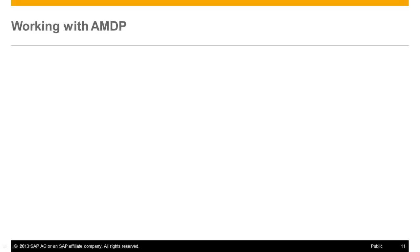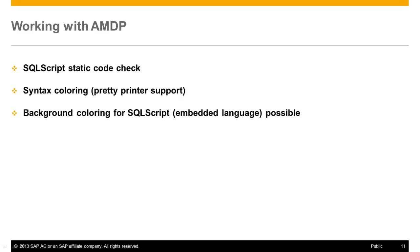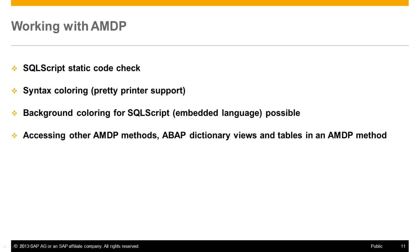Before closing this video, let me go through some aspects of working with AMDP. Static code check and syntax coloring is provided for embedded SQLScript. For better visibility of AMDP methods in a class, you can set a background color for SQLScript, which is an embedded language. You can also access other AMDP methods, ABAP dictionary objects, and ABAP tables within an AMDP method.